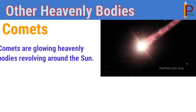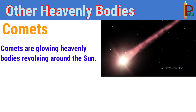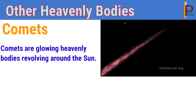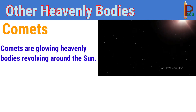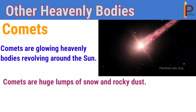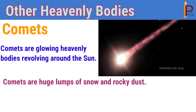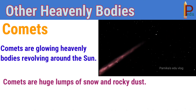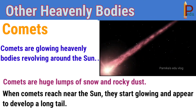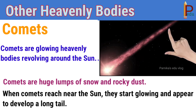Comets are glowing heavenly bodies revolving around the sun. Comets are huge lumps of snow and rocky dust. When comets reach near the sun, they start glowing and appear to develop a long tail.